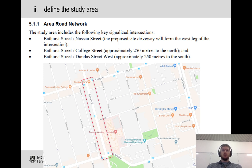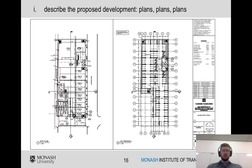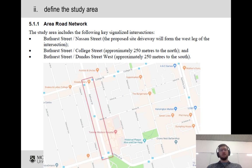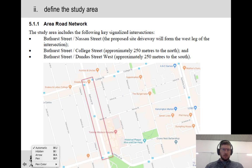The next bit is: what's the study area — what intersections are you going to look at? Are you going to look at half of downtown Toronto or just the little intersection right outside the door? You'd need to talk to the local traffic engineer and look at their standards to find out. For this site, they looked at Nassau Street intersection and then the signalized intersections on either side — Bathurst and College, and Bathurst and Dundas.